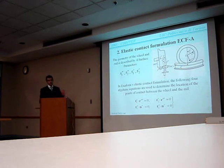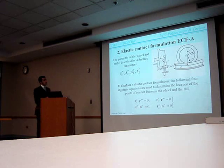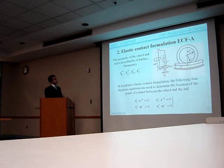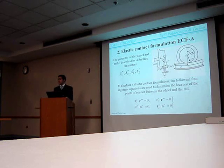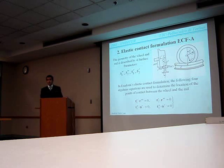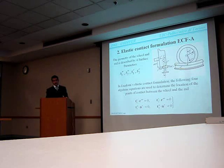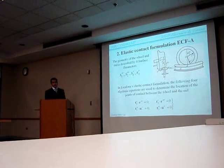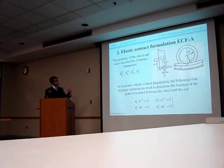The elastic contact formulation used in the thesis is elastic contact formulation A. Here we can see four parameters called surface parameters that define the location of the contact point between wheel and rail. Two of these parameters, S1R and S2W, define the plane which we use to locate the contact between wheel and rail, while the other two are external parameters.